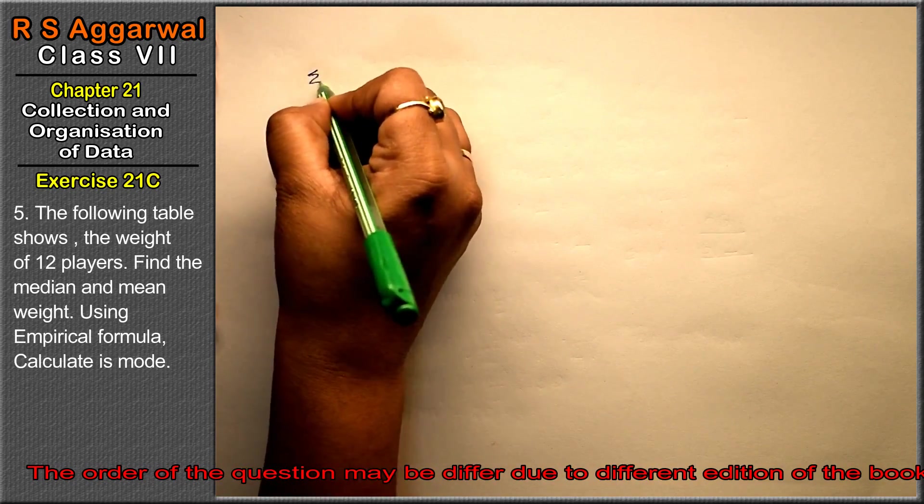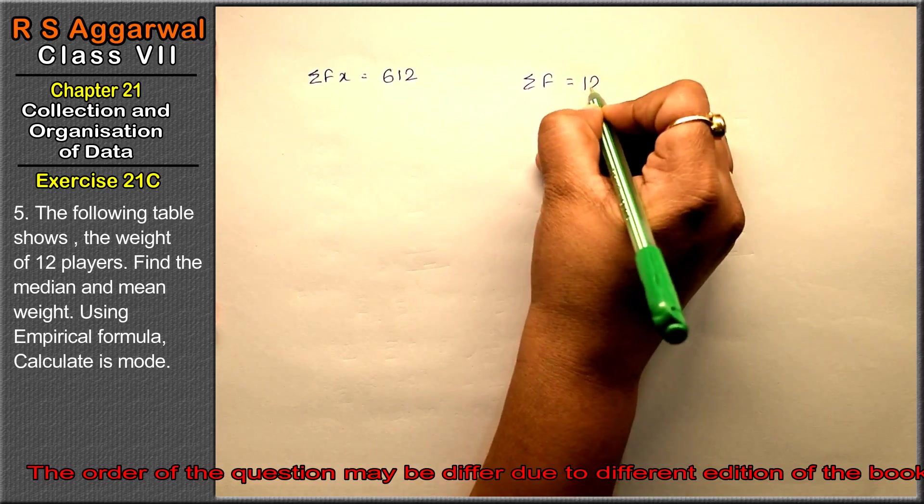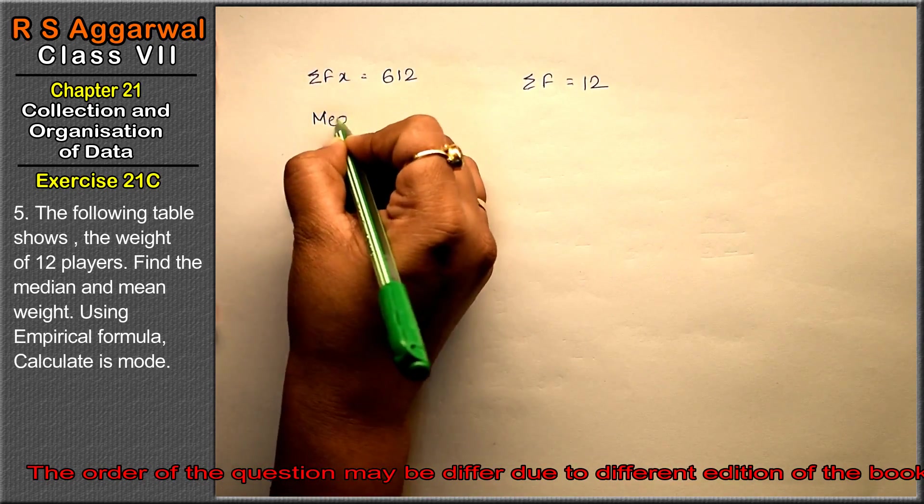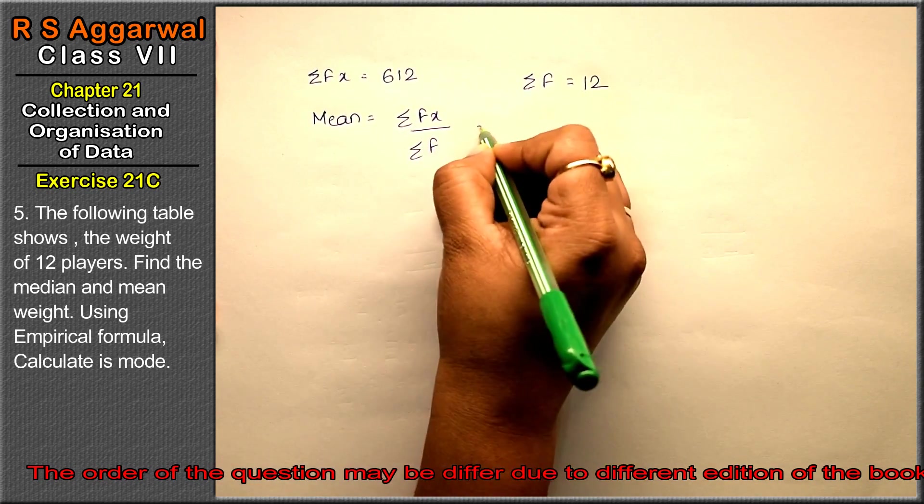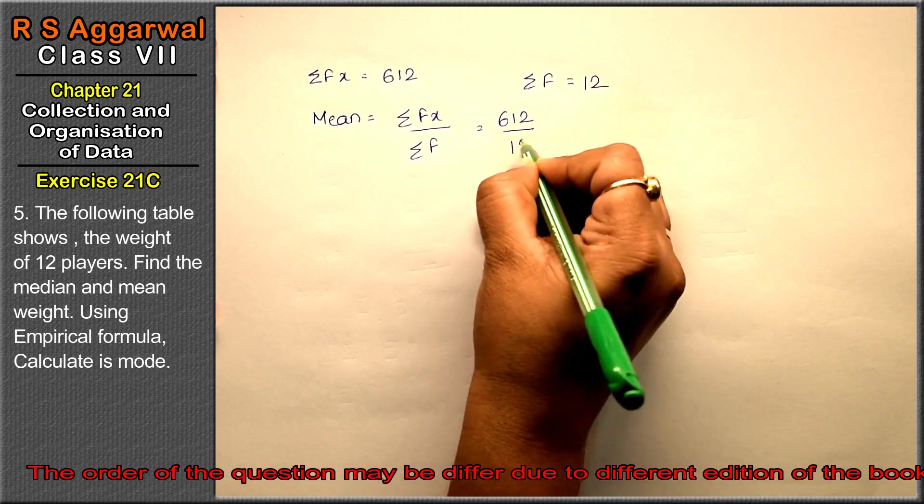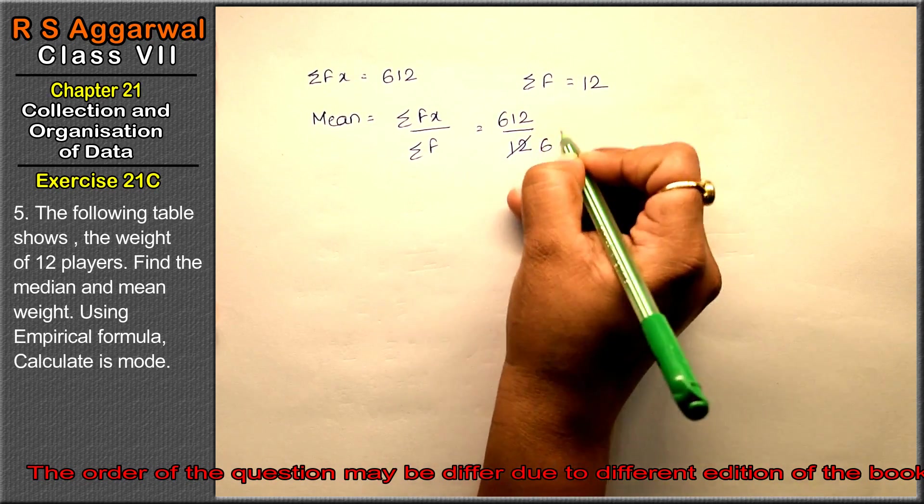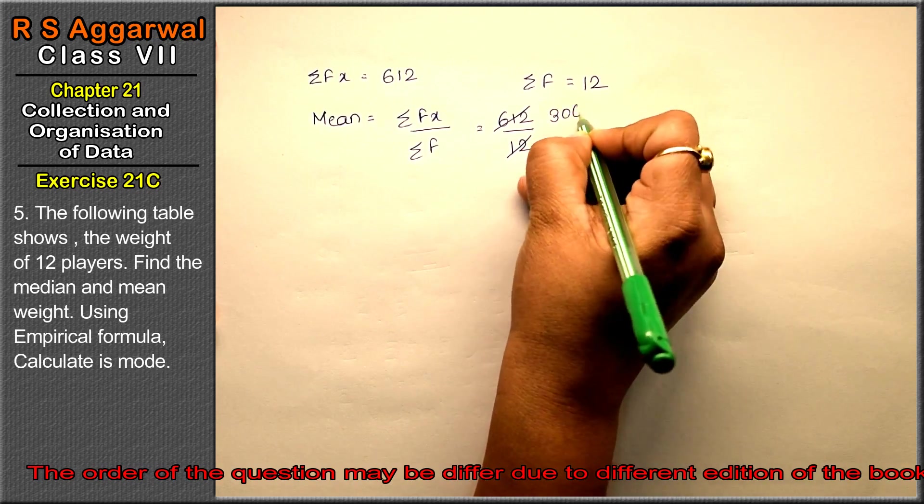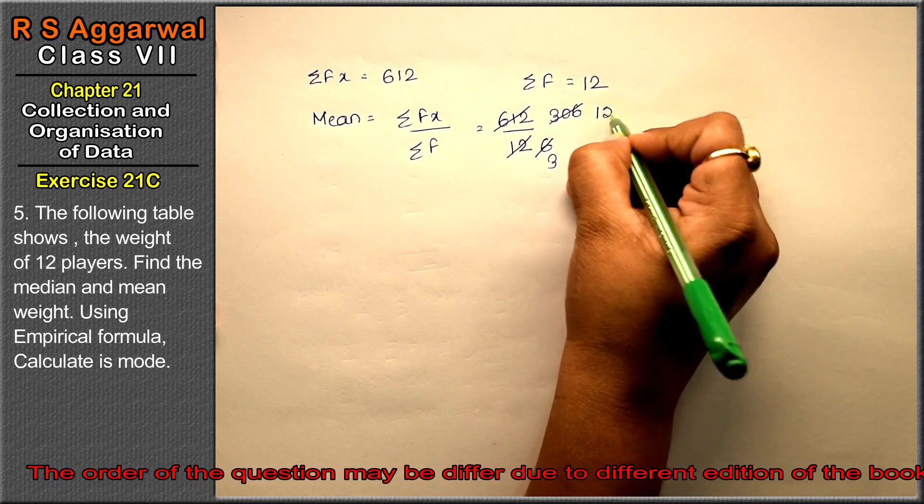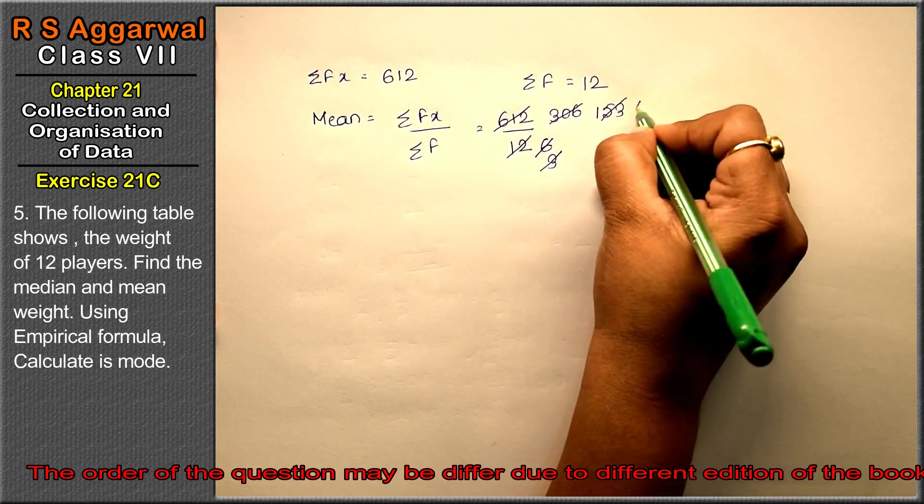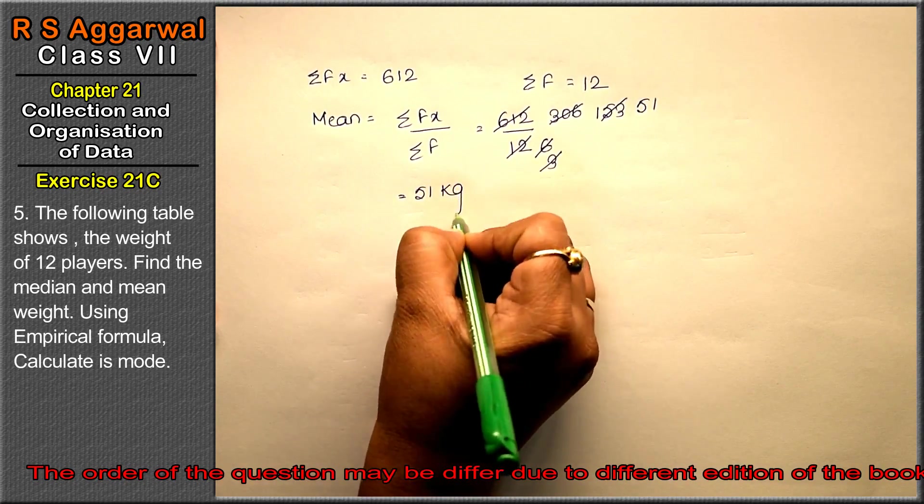Now sigma Fx is 612 and sigma F is 12. Dividing: 2 sixes are 12, 2 threes are 6, zero. 2 sixes are 12, again 2 threes are 6. 2 ones are 2, 2 fives are 10, 2 threes are 6. 3 ones are 3, 3 fives are 15, 3 ones are 3. The mean is 51 kg.